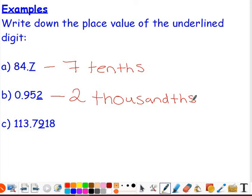And then finally, example C, 113.7918. Well, the 9 is the second digit after the decimal point, so we know that's our hundredths column. So we have got nine hundredths.